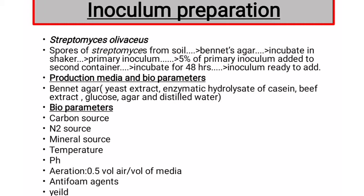The secondary inoculum is added to the fermenter. There are different bioparameters that affect the fermentation process, which include carbon source, nitrogen source, mineral source, temperature, pH, yield, anti-foam agents, aeration, etc. In the vitamin B12 production, glucose acts as the carbon source. Soybean meal, yeast extract and casein provide the nitrogen source for the production.